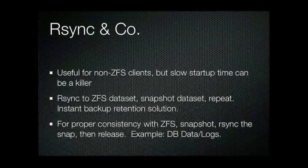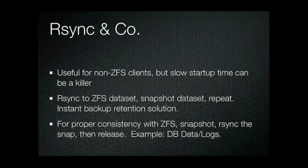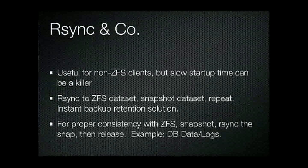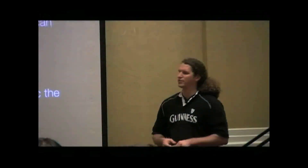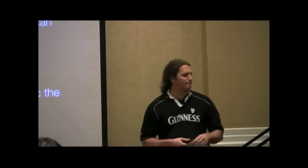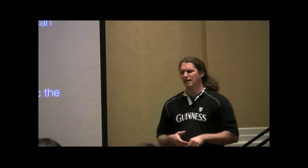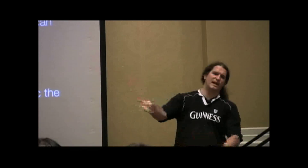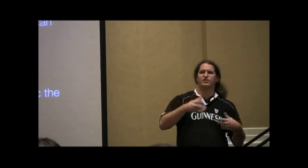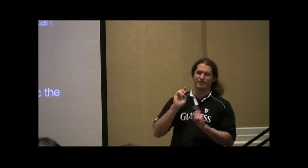People love R-Sync. It's extremely useful for non-ZFS clients, but the big problem with R-Sync is the slow startup. Once it gets data moving it's nice, but you have to wait — especially if you're doing incrementals — and that startup time can really be a killer. One way we used it was for backup of non-Solaris, non-ZFS systems at a startup where we couldn't afford real backup software: we'd take a Thumper, set it up with ZFS, R-Sync the system data from BSD systems into a ZFS dataset, and once the R-Sync completed, snapshot it in ZFS.